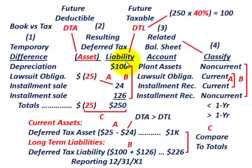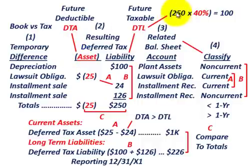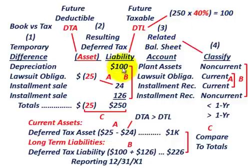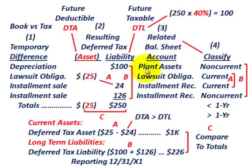Everything is shown in thousands of dollars, so $100 here represents $100,000. To get that number, you take the temporary difference — in this case $250,000 — times the tax rate of 40%, and that gives you $100,000 worth of deferred tax liability. Based on this temporary difference, you then have to determine the related balance sheet account.